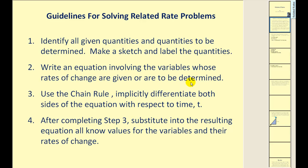Make a sketch if possible. Write an equation involving the variables whose rates of change are given or are to be determined. Then use the chain rule to implicitly differentiate both sides of the equation with respect to time t. Lastly, substitute into the resulting equation all known values for the variables and their rates of change in order to answer the questions.